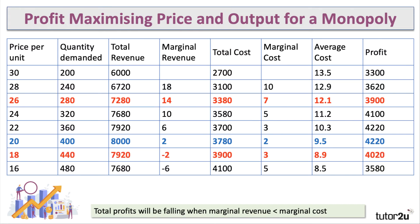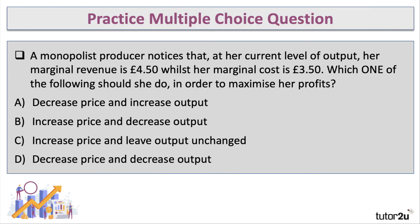Just to show that, let's say we cut the price from 20 to 18 per unit and sell another 40 units. Our revenues actually go down and our costs go up, so total profit must fall. Profits will always fall when the marginal revenue is less than the marginal cost.